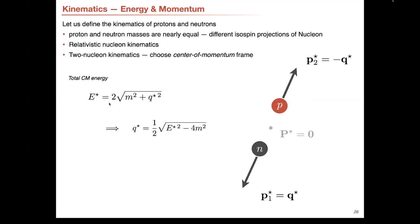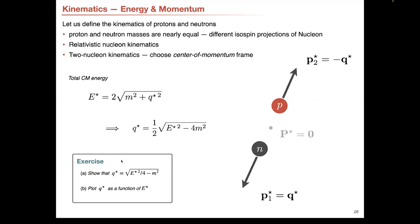Since the total momentum is 0, we can just describe the system with a relative momentum Q. From this we can find a relation — inverting this relation — so if you have the total center of momentum frame energy, you can find the relative momentum just by this square root relation. It's useful to plot the momentum as a function of E — it should be square root-like. The square root feature is what gives rise to the interesting non-analytic behavior of the amplitude.